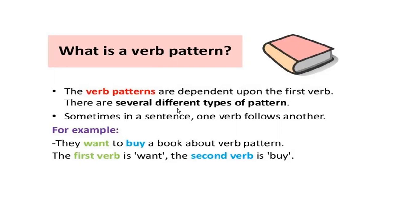There are several different types of patterns. Sometimes in the sentence one verb will follow another. For example, look at this: 'They want to buy.' So 'want to buy' — this is a verb pattern. After 'want' you need two verbs — an infinitive with 'to'. They want to buy a book. The first verb is 'want' and the second verb is 'buy'. So after one verb you need 'to' plus another verb. This is the verb pattern: 'want to buy.'